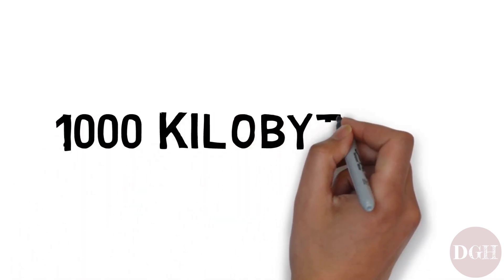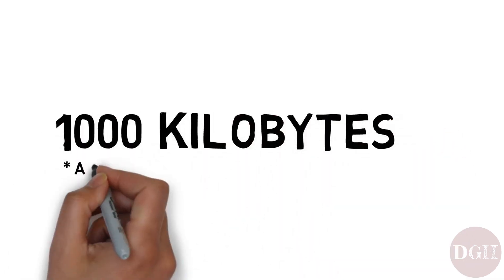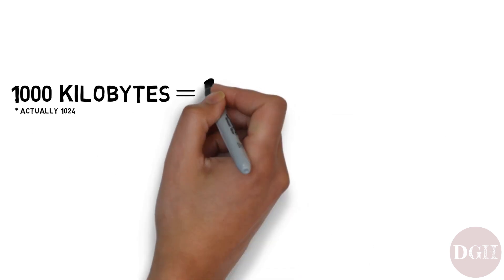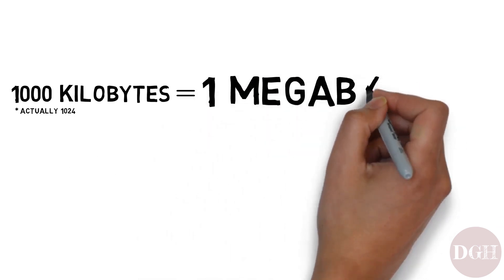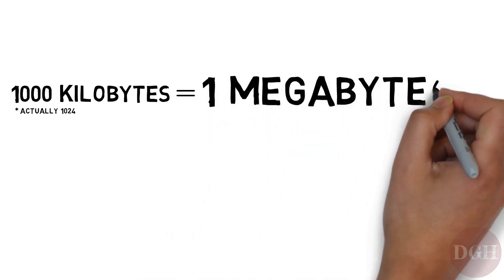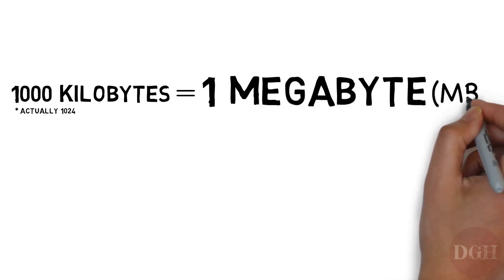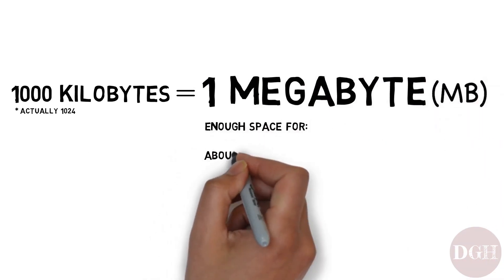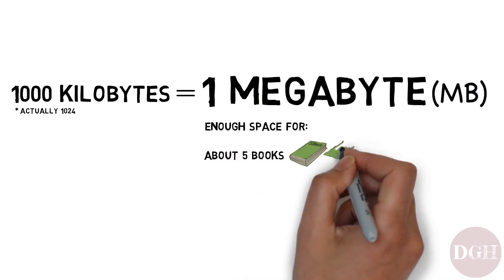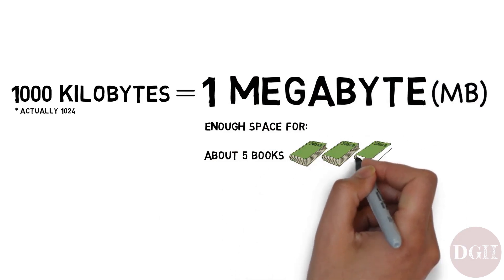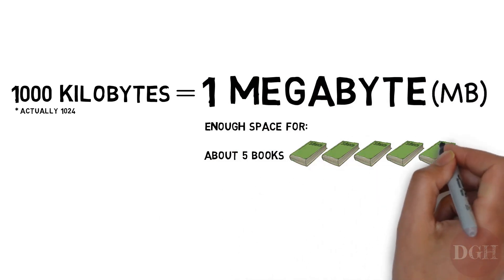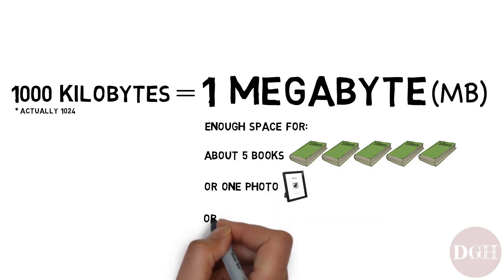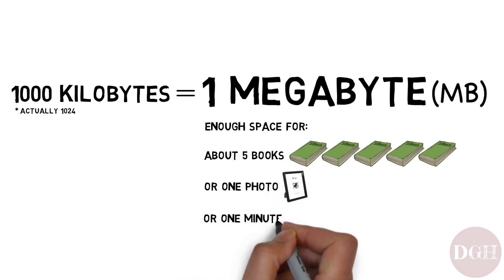So what's it called if you have 1,000 kilobytes? It's called a megabyte, often abbreviated as MB. One megabyte is enough space to hold about five large books, or one photo, or one minute of music.